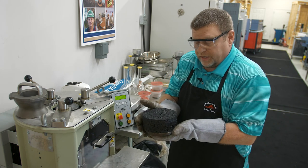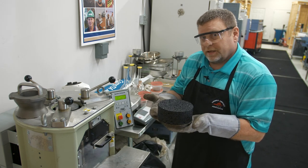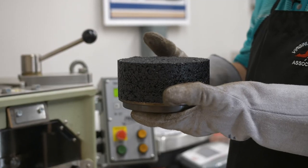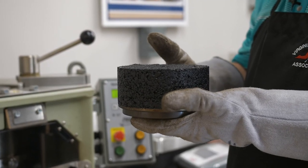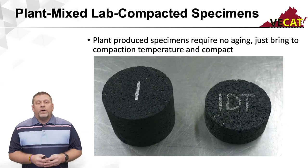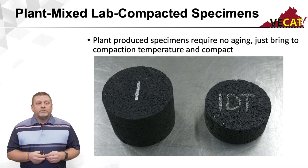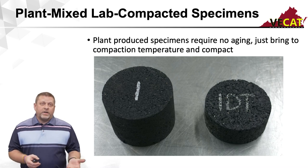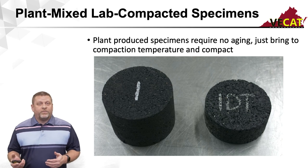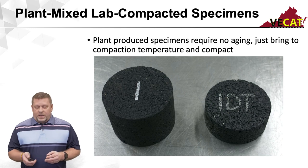Since these specimens are targeted at 7% air voids, I typically carry them with the base plate under them because they're more fragile than a normal volumetric specimen compacted to a tighter density. It doesn't matter which specimen you're producing for plant-produced testing — whether volumetric or BMD performance test — there's no aging required. We just want to bring each specimen up to compaction temperature and compact it as quickly as possible. Thank you.